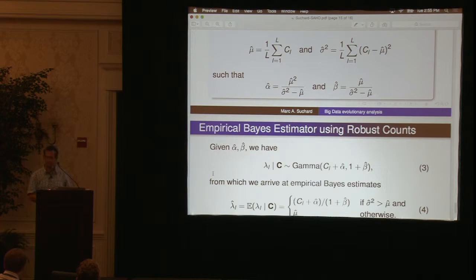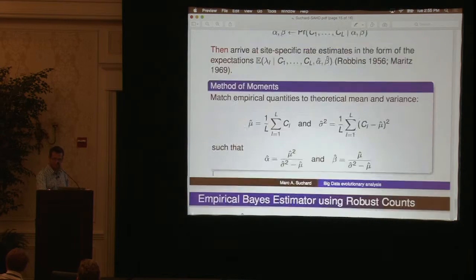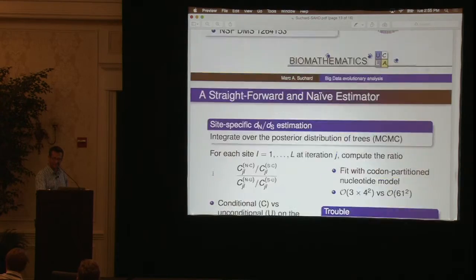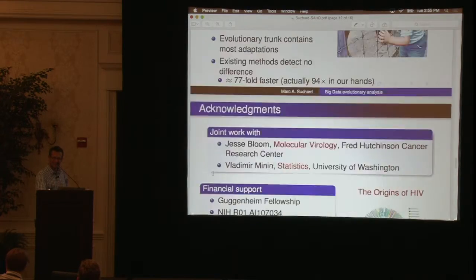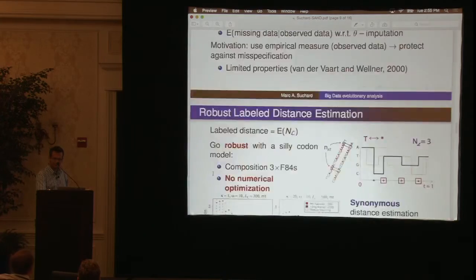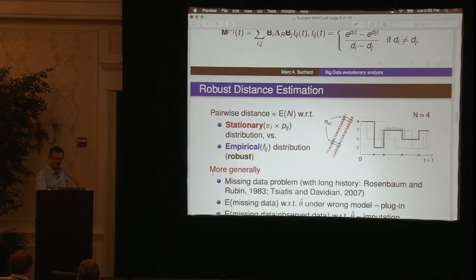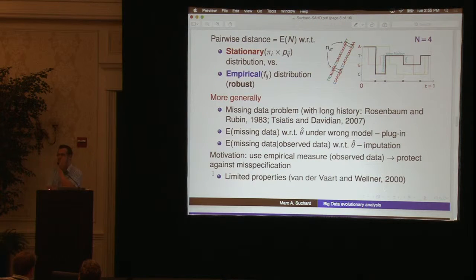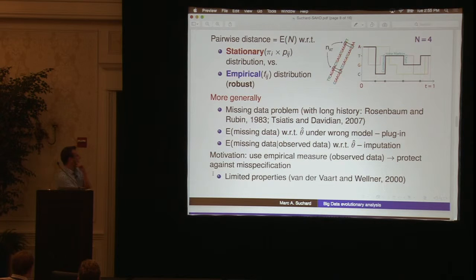The question about gaining robustness by averaging — taking the expectation with respect to the observed data — is a good one. You gain robustness by taking that second expectation. So instead of just using a plug-in estimator from some model for the missing information, you integrate over the observed data using the empirical measure.